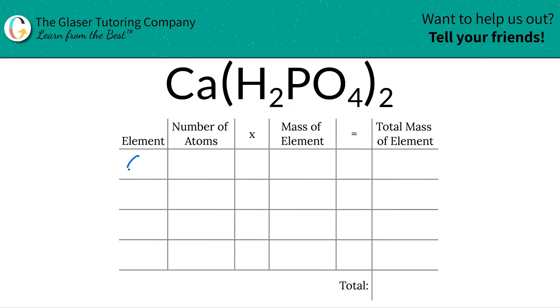So I see I have an element of calcium, I have hydrogen, I have phosphorus, and I have oxygen. So you're basically just labeling the letters, or the elements essentially, that you see.